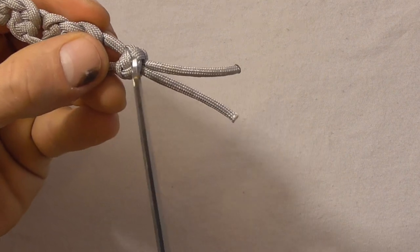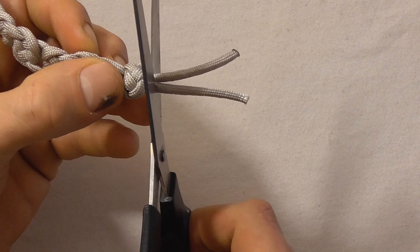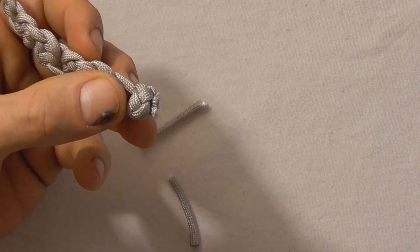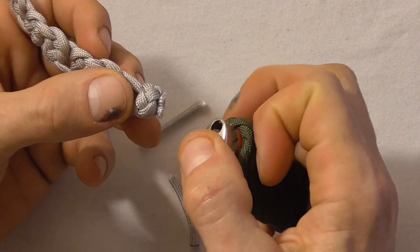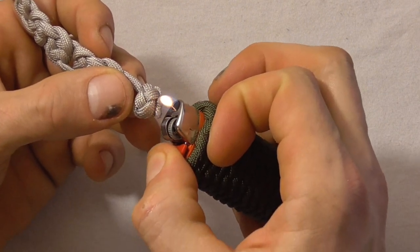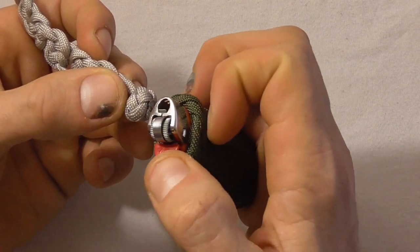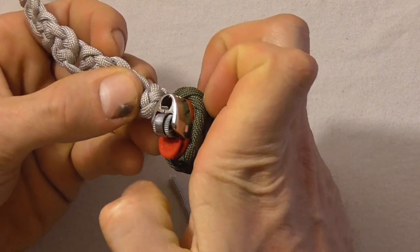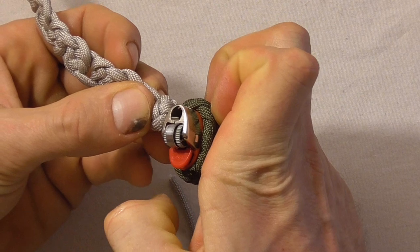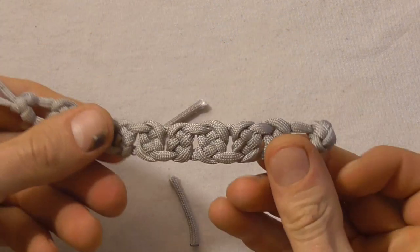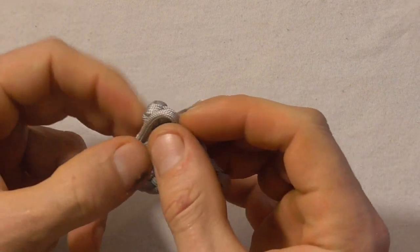So we'll just snip them off, use a lighter, just singe these ends, and press them into place. And then that should be your finished piece.